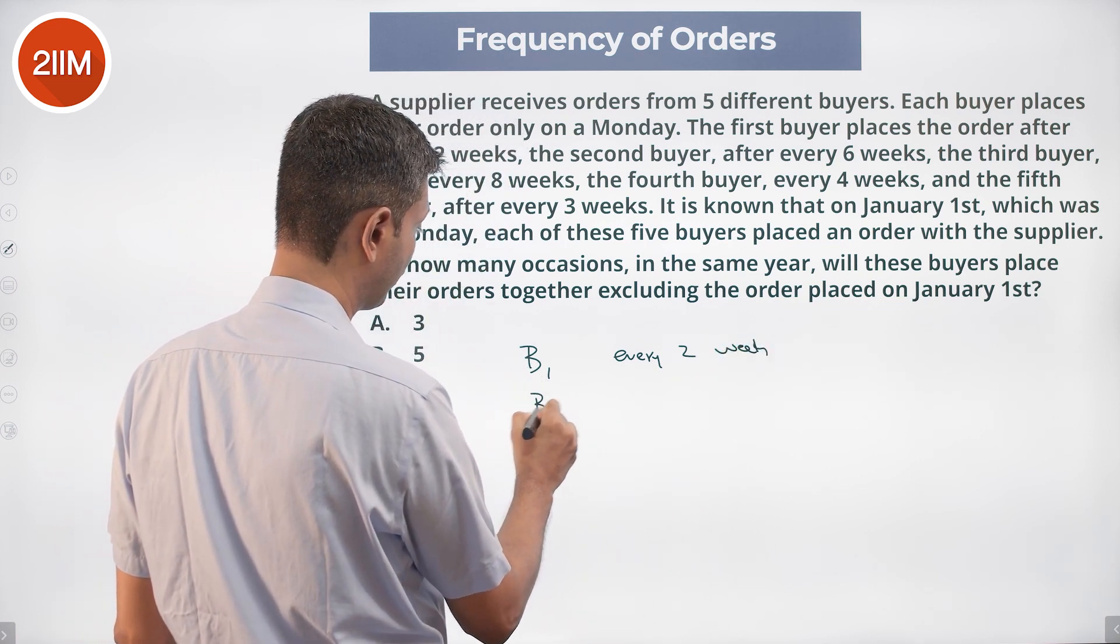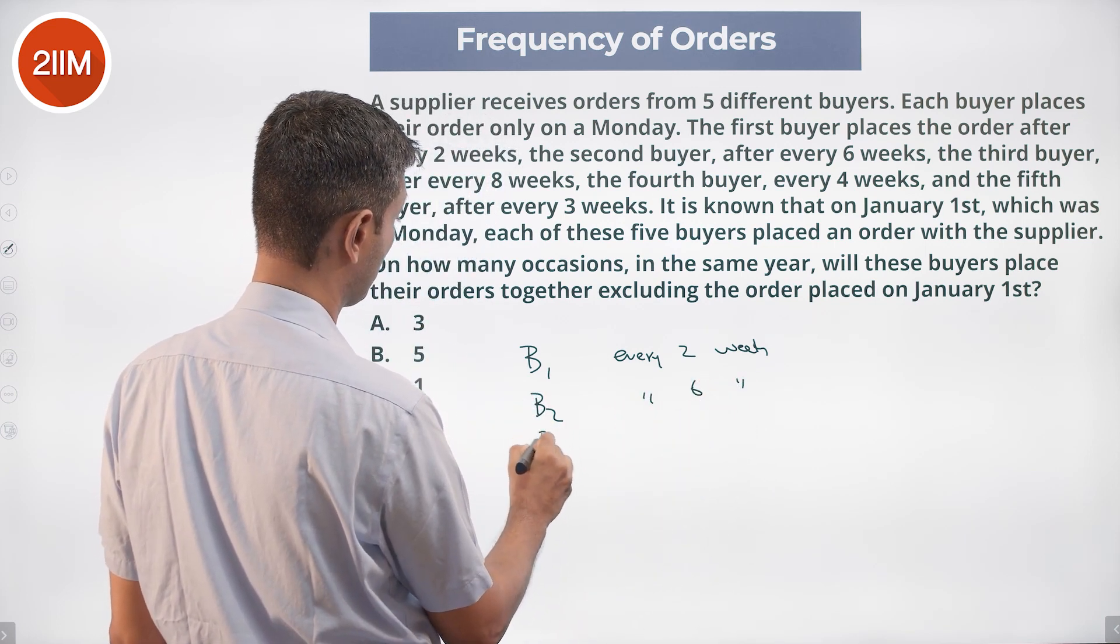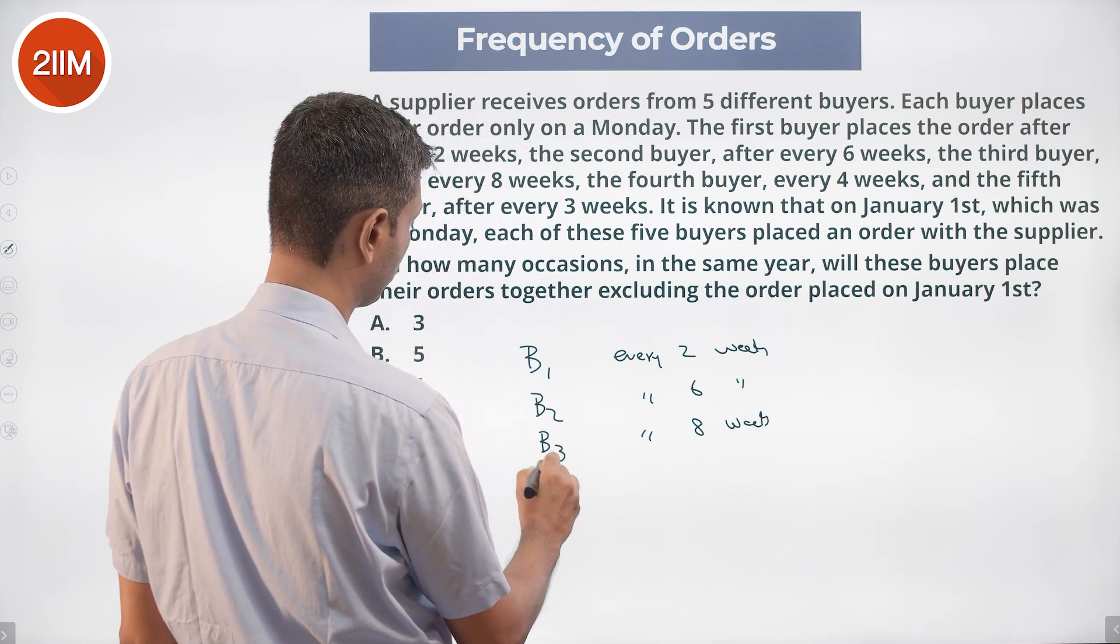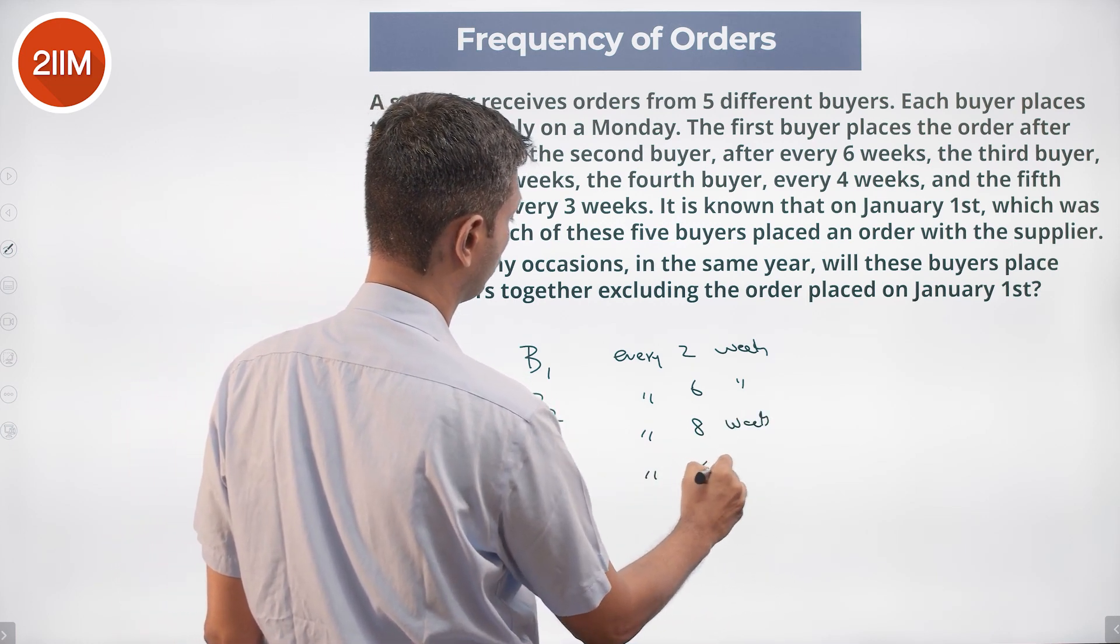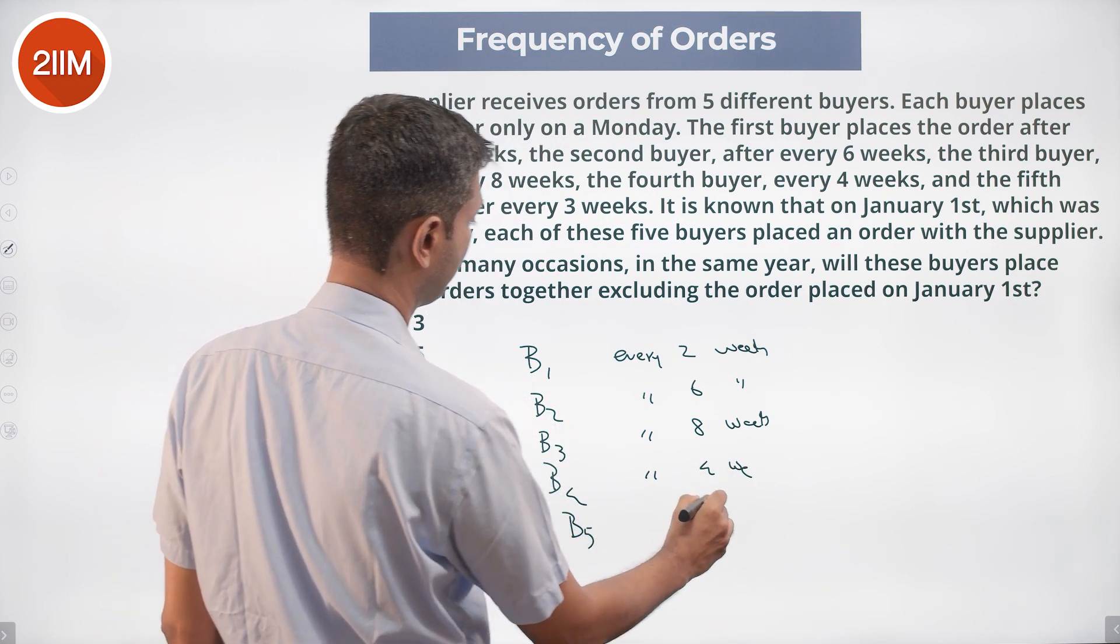Buyer two after every six weeks, buyer three after every eight weeks, buyer four after every four weeks, and the fifth buyer after every three weeks.